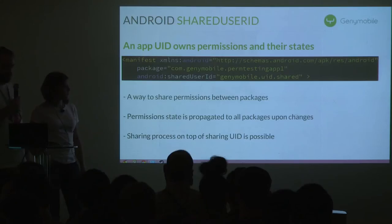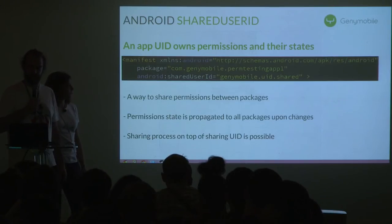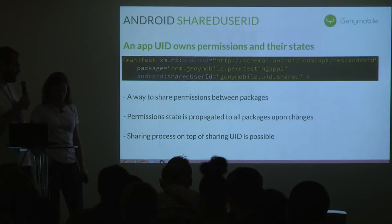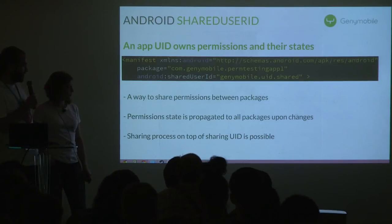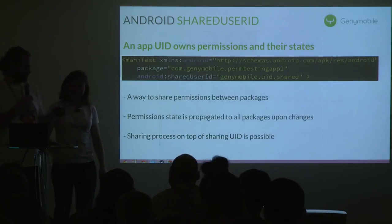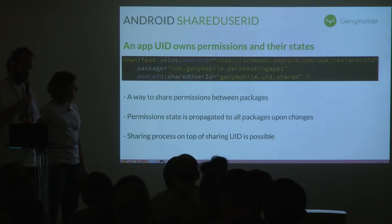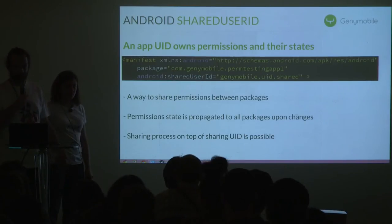One thing you can do with UIDs as an application developer is use the shared UID attribute in the manifest tag. This allows you to use the same UID across several applications. It allows sharing permissions between packages — the permission state is propagated to all packages, so if two applications want the same permission, only one needs to have it granted. The same applies to revocation. You can also run two applications in the same process when using shared UID.